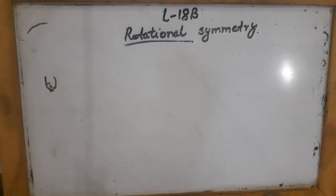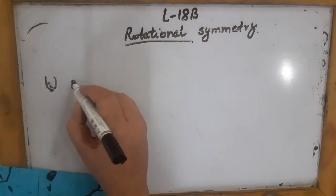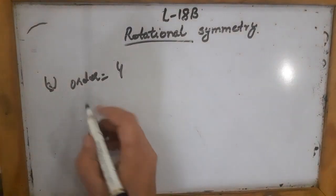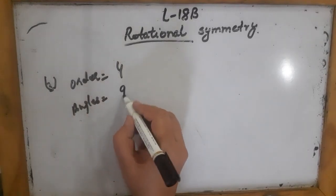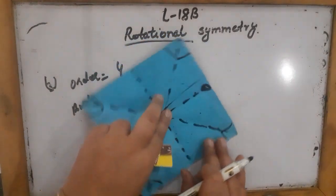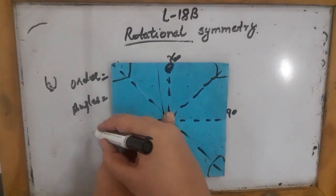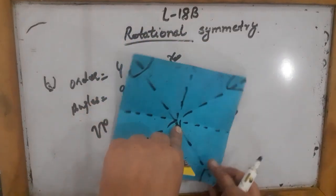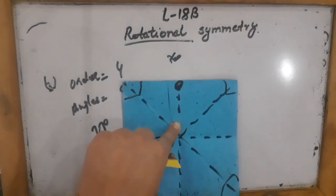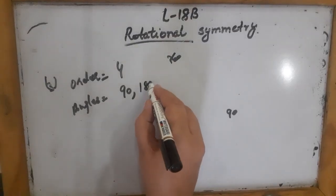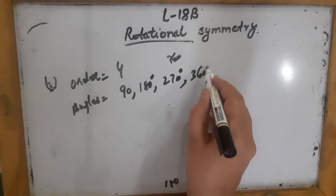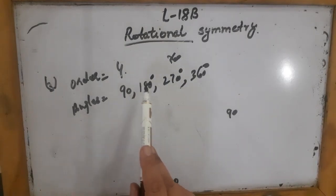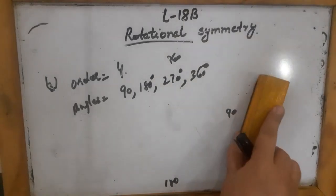They are asking: what is the order of rotational symmetry of a square? The order of a square is 4, meaning it looks the same 4 times during one complete rotation. The angles are: at 90 degrees it looks the same, at 180 degrees it looks the same, at 270 degrees it looks the same, and then again at 360 degrees. So the order of a square is 4, and the angles of rotation are 90 degrees, 180 degrees, 270 degrees, and 360 degrees.